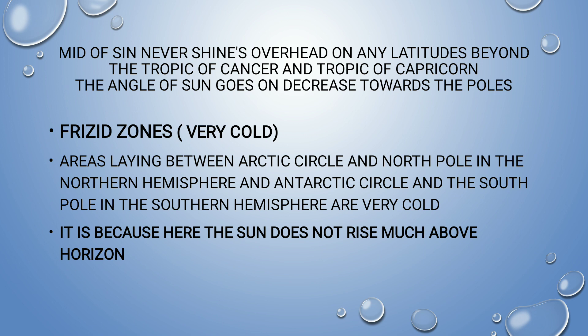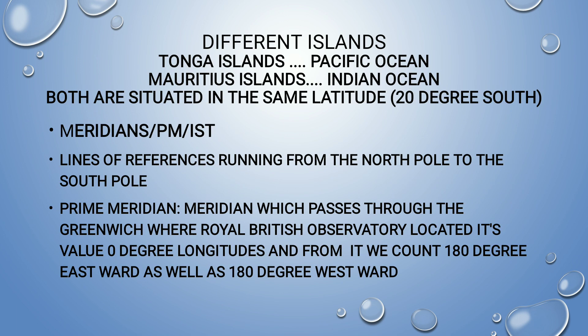Frigid zones and torrid zones are very important topics. Some different islands: Tonga Island is located in the Pacific Ocean and Mauritius Island is located in the Indian Ocean. Both islands are situated on the same latitude, which is 20 degrees south in the southern hemisphere.